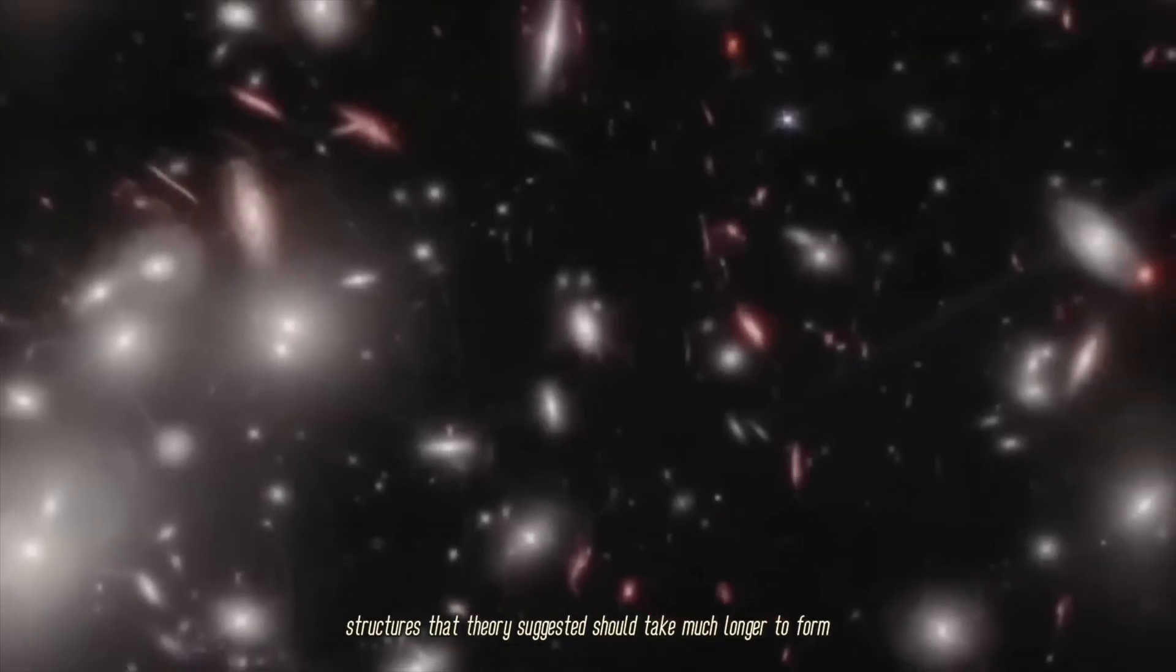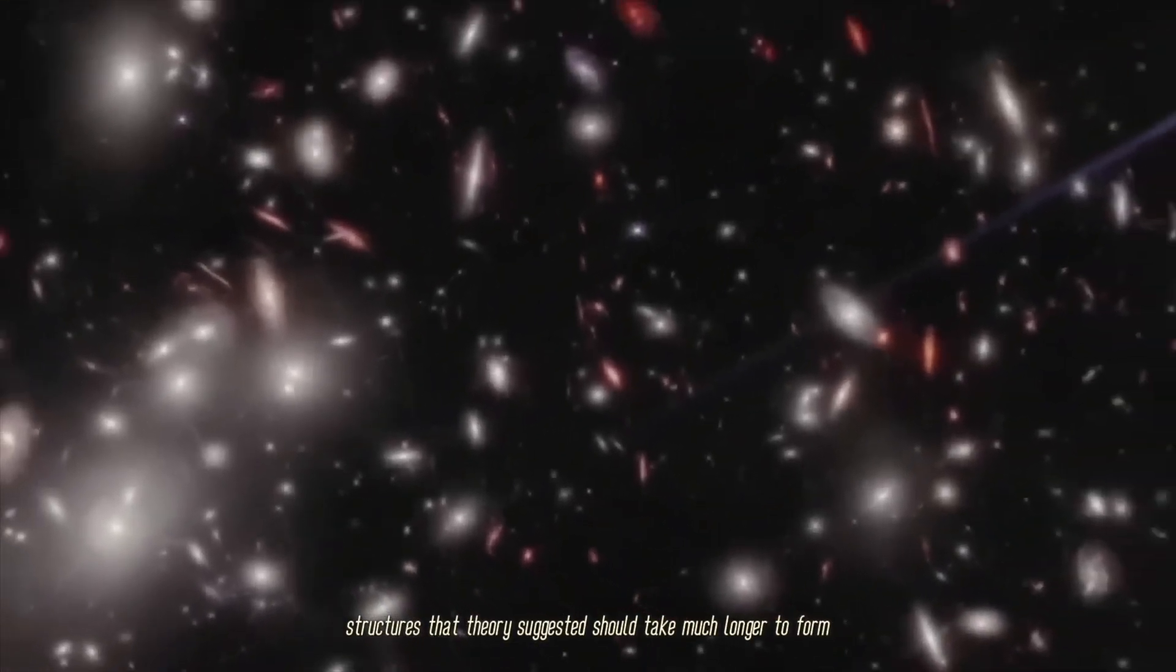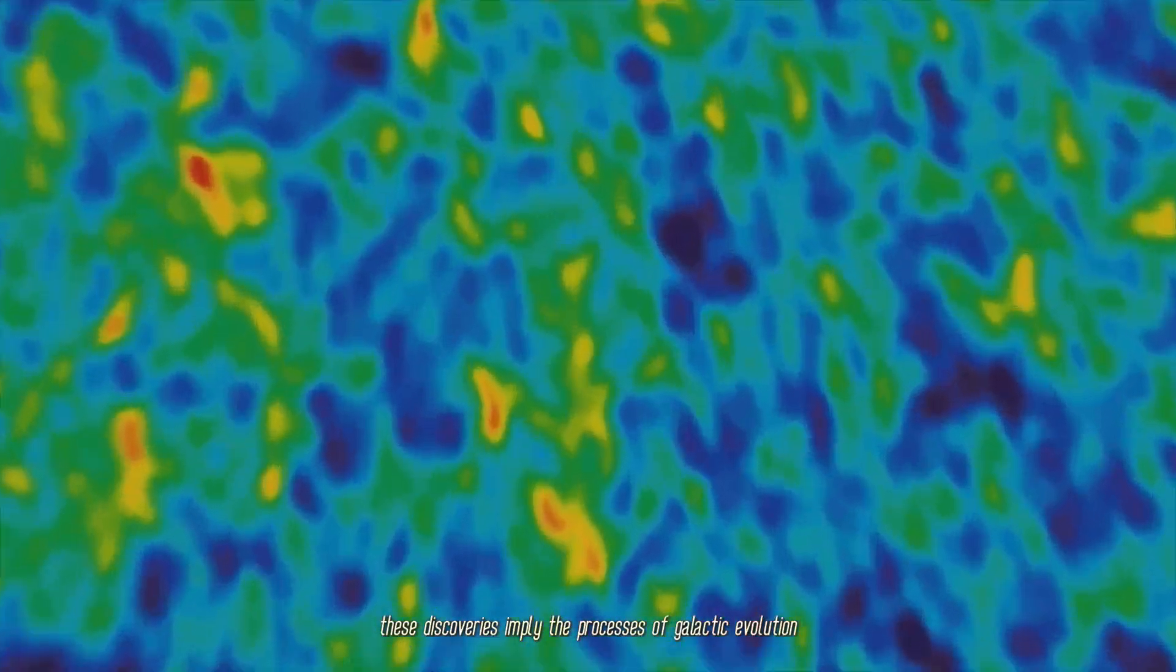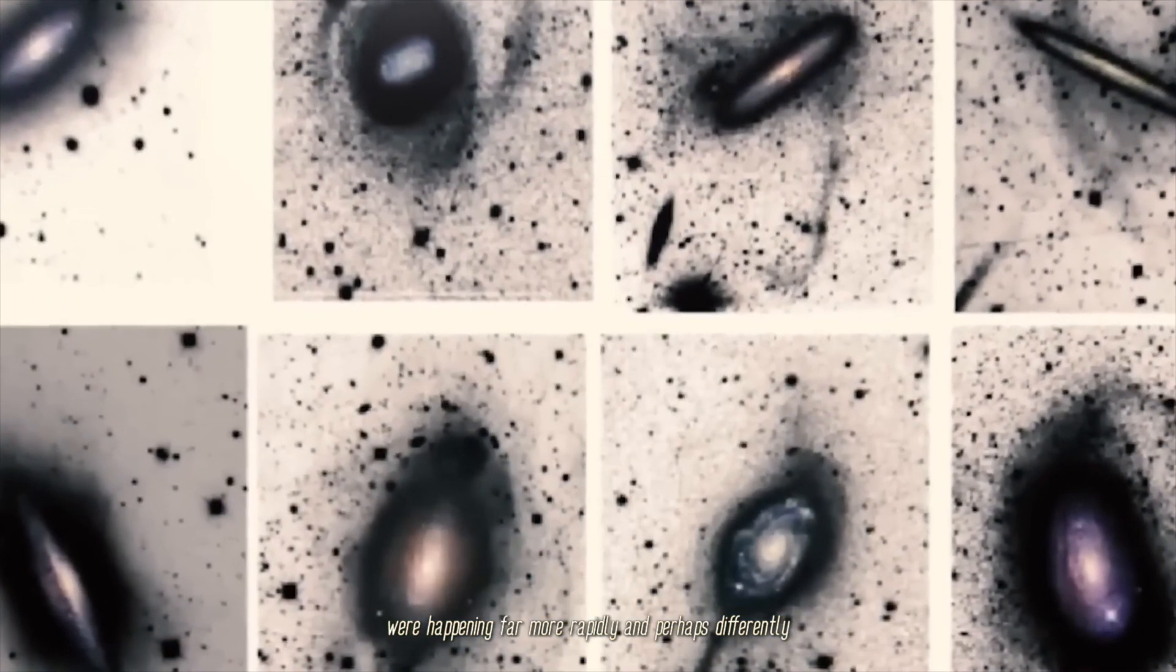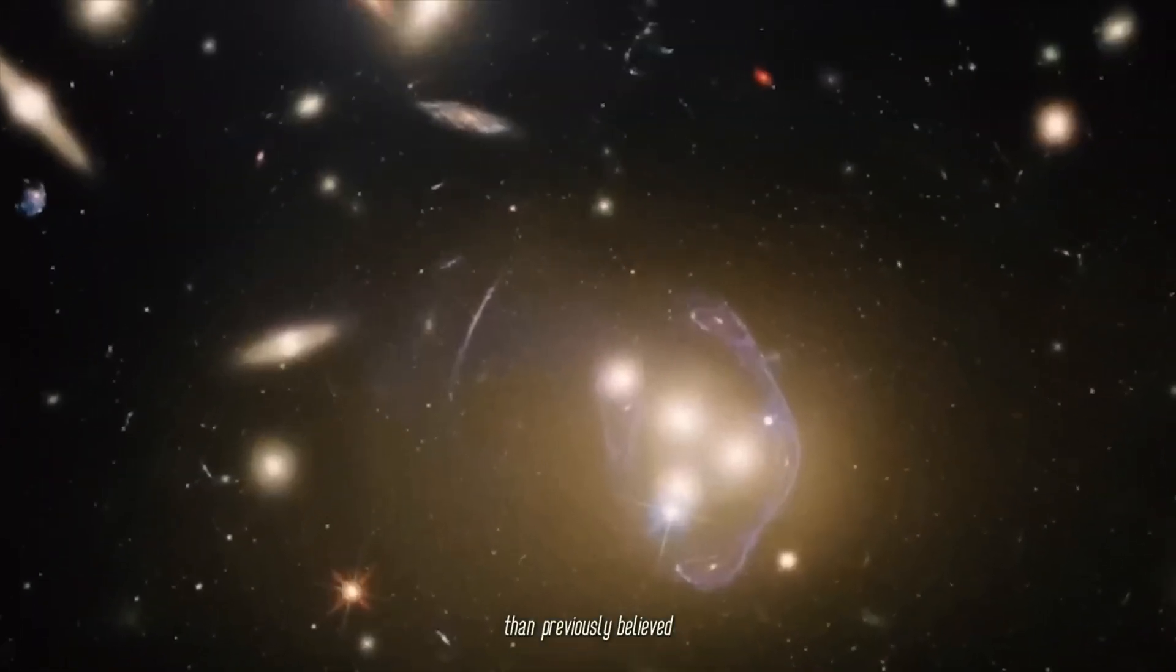Structures that theory suggested should take much longer to form. These discoveries imply the processes of galactic evolution were happening far more rapidly, and perhaps differently, than previously believed.